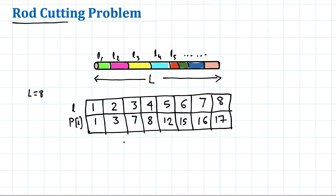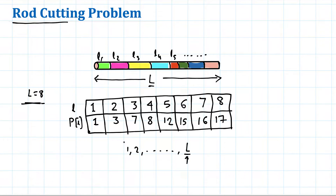The rod cutting problem states that if we have a rod of length L, we can break it into smaller units — length one, length two, and so on all the way up to length L, in which case we do not break the rod at all. We are given the prices of various lengths. Here the length is eight and we have a price array: one unit is priced at one, two units at three, three units at seven, and so on. The price of eight units of rod is seventeen, so if we sell the rod without breaking it we get seventeen.